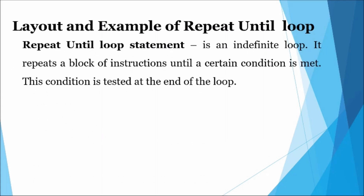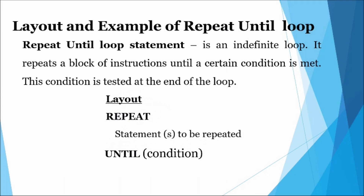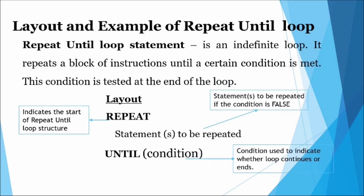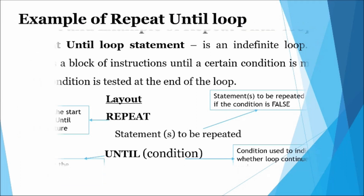Repeat-until loop statement: a repeat-until loop is classified as an indefinite or infinite loop. It repeats a block of instructions until a certain condition becomes true. This condition is tested at the end of the loop, after the block of statements are executed at least once. The keyword 'repeat' indicates the start of the loop structure. The statements between the 'repeat' and 'until' keywords form the loop block or compound statement. These statements will be repeated until the condition becomes true.